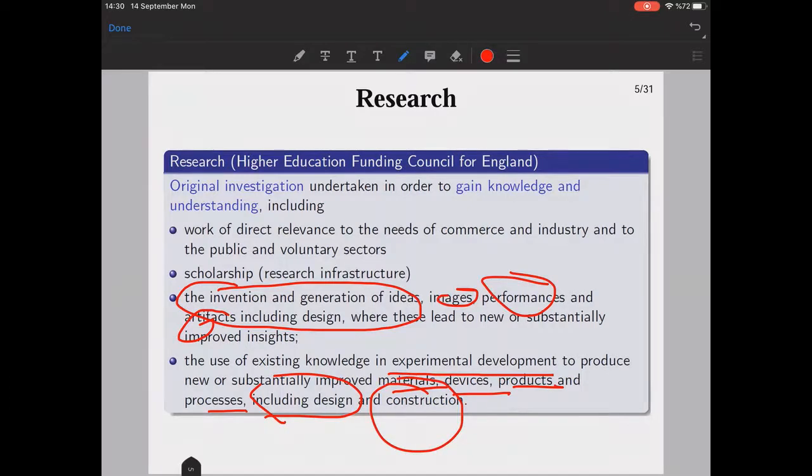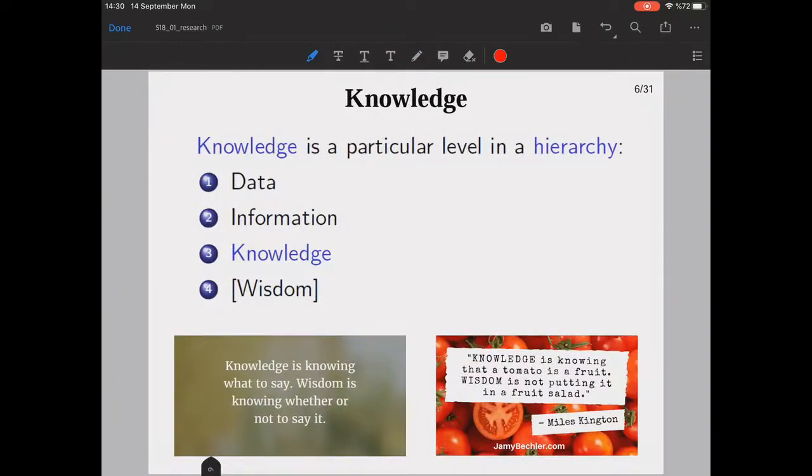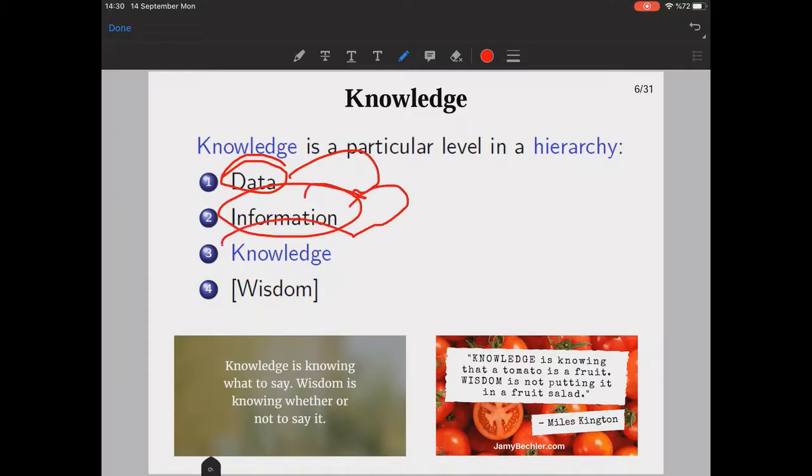What is knowledge? Our ultimate destination here. Knowledge is in fact a particular level in a hierarchy. You cannot directly acquire knowledge—it has some steps. You first work on data usually, then from data you get some information, and from information you get the knowledge. Having wisdom about something is a bit different, which is out of the scope of this session.